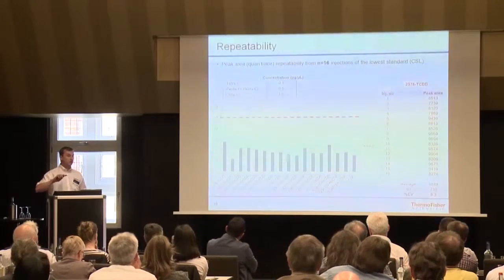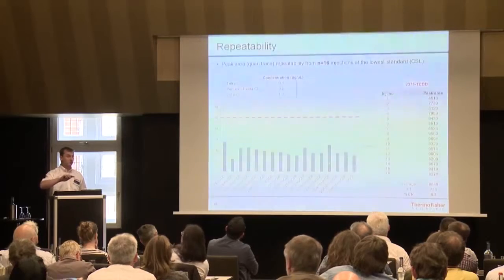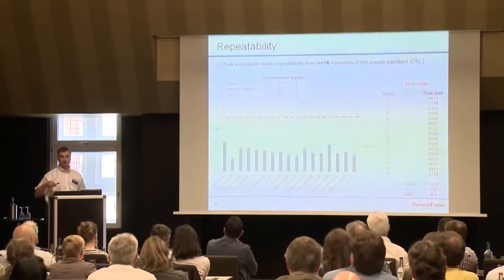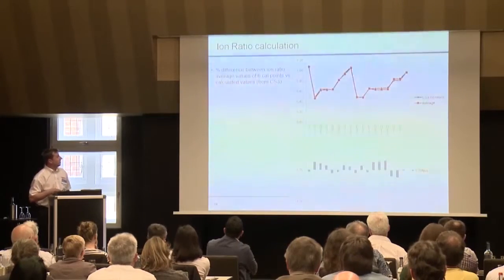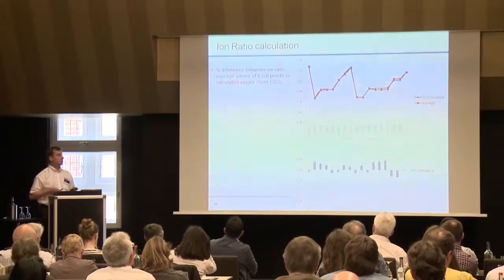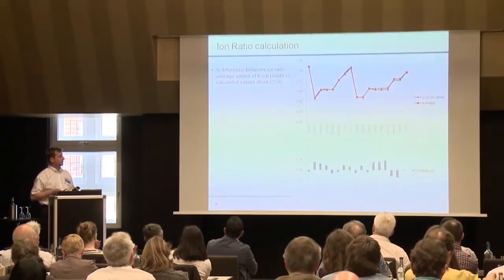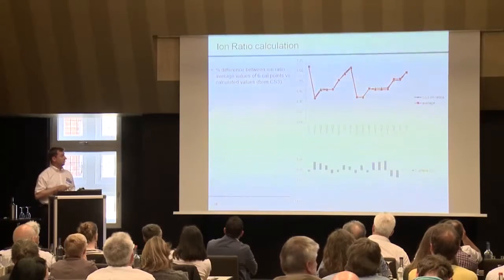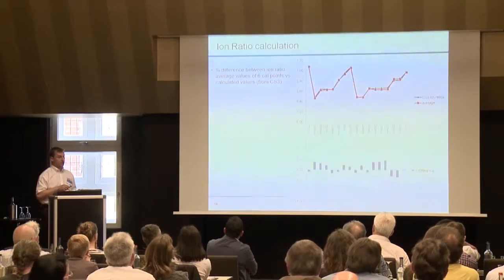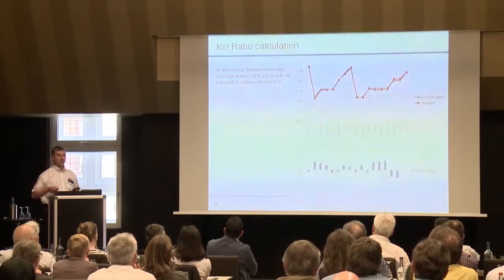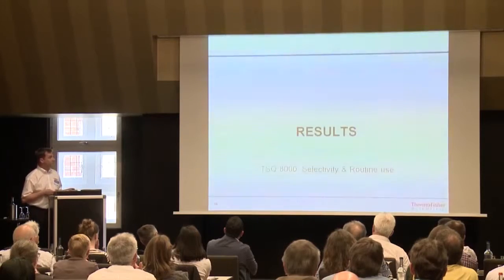Interestingly, if you calculate the instrument limit of quantitation from these results, you end up with exactly the same numbers as observed before in the diluted CS1 — which is very good news. For the ion ratios, one criteria when using GC-MS/MS is to be within 15% when calculating ion ratios across the calibration curve. We measured ion ratios from a CS3 standard and were well within 5%, and also well within 10% of the theoretical ion ratios.